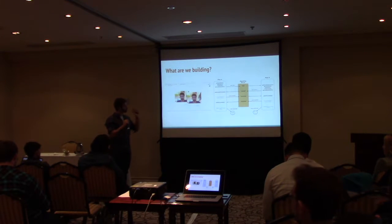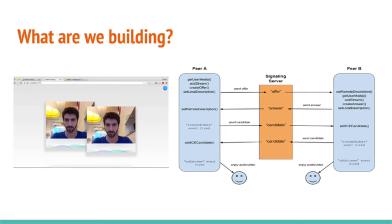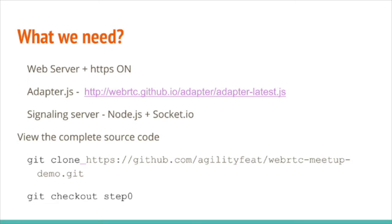I'm going to be following this flow of two peers — basically two persons sharing video and audio. So let's say first what we need. We need to have a web server running over HTTPS. For this demo I'm going to use a Python server, but you can have Node.js or Ruby, whatever you want. Remember that HTTPS is very important because on Chrome this is mandatory.